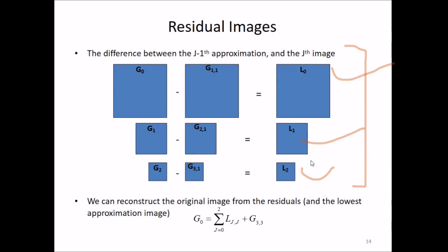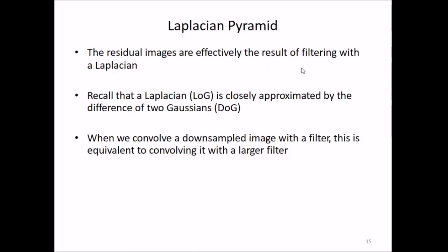Now we have the Laplacian pyramid. The residual images are effectively the result of filtering with a Laplacian. Recall that a Laplacian (LoG) is closely approximated by the difference of two Gaussians (DoG). When we convolve a downsampled image with a filter, this is equivalent to convolving it with a larger filter.